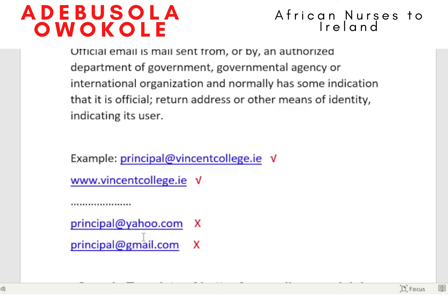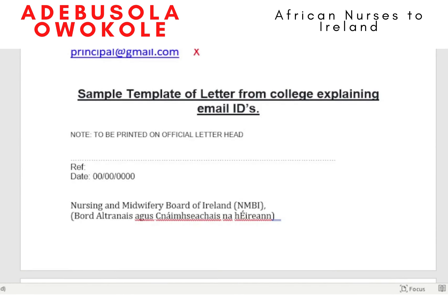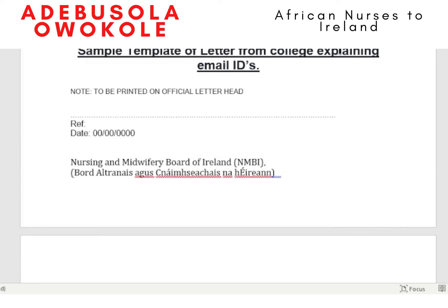All emails need to be official emails. If your supervisor who filled the employment form provided a personal email, they need to provide an explanation. All explanations for email IDs need to be on an official letterhead paper for them to be accepted. This is a sample template of a letter from a college explaining their email ID.